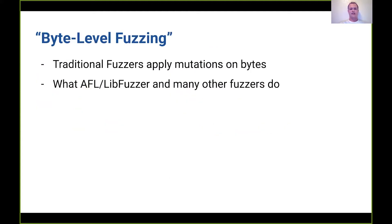If we take a look at normal fuzzers, these are byte-level fuzzers. If we look at AFL and libfuzzer, they apply their mutations on individual bytes. What that means is given a string, they'll replace bytes in the string. They might add a series of bytes, remove a series, but all their mutations are done on the bytes themselves.